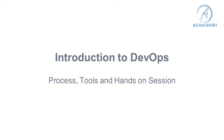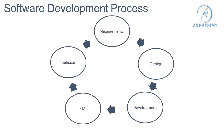We talked about development, testing, and operations — how your day-to-day activities happen. But how does software actually get developed? When you have a new customer or a new project, how does it go through various phases? The first phase in software development is the requirements phase, where we understand what is required: inputs, outputs, performance, user interface, whether it's a web, desktop, or mobile application.